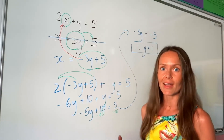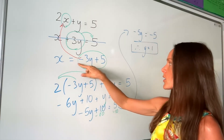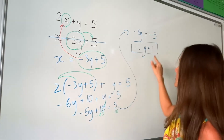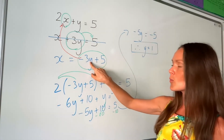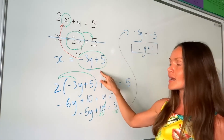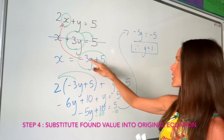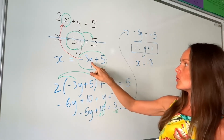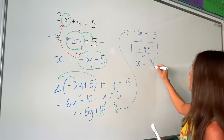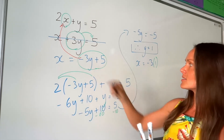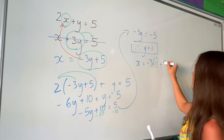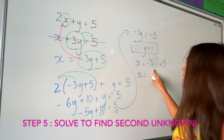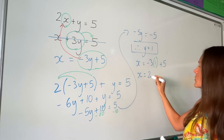So all that's left is to find the x value, and we can use that equation there since it's already organised to say x equals. So we just need to swap that value of 1 in where the letter y is, and we can calculate this to find x. So I'm going to write this equation out again — except when I get to the letter y, I write the number 1. Negative 3 times 1 is negative 3, and then if I add 5, I get positive 2.